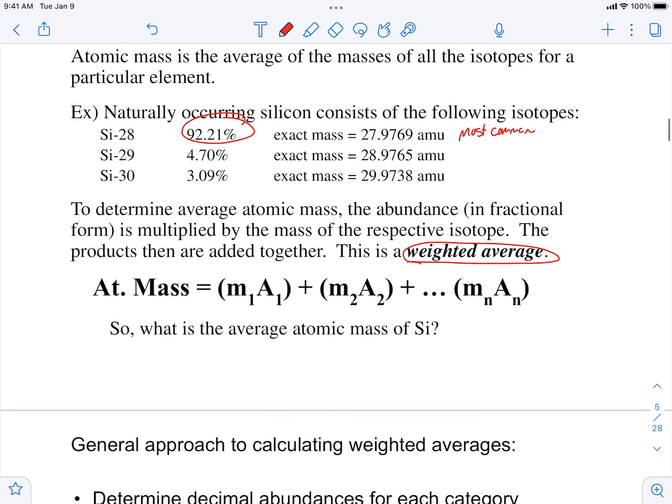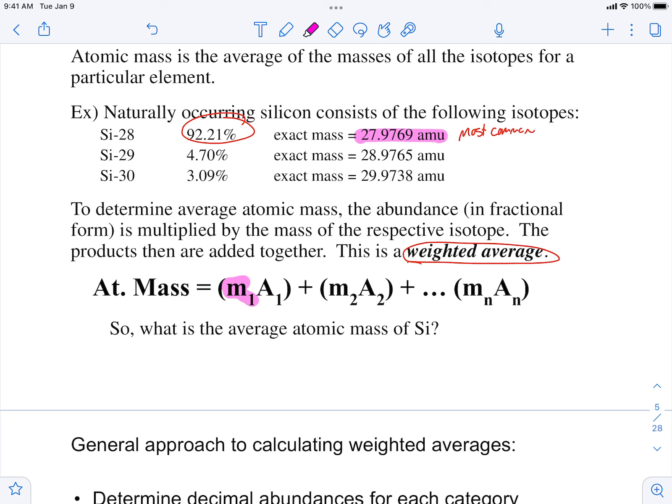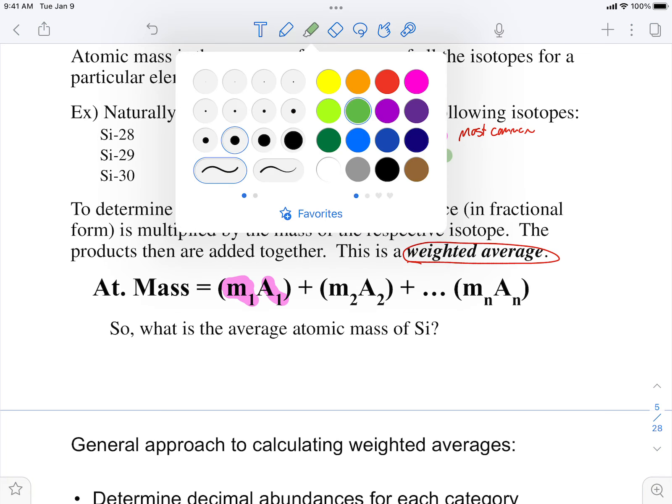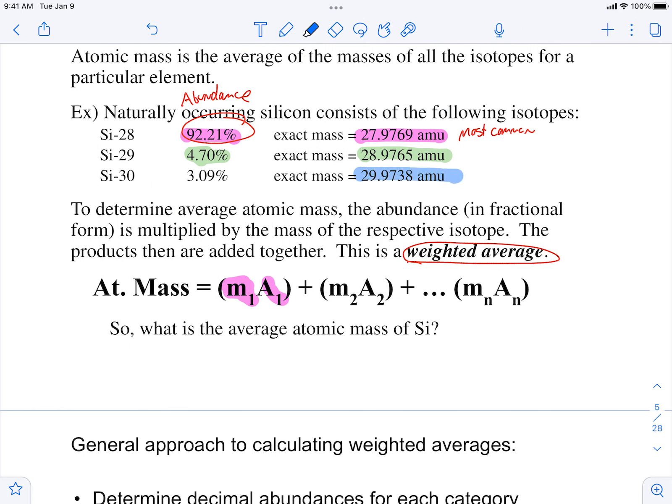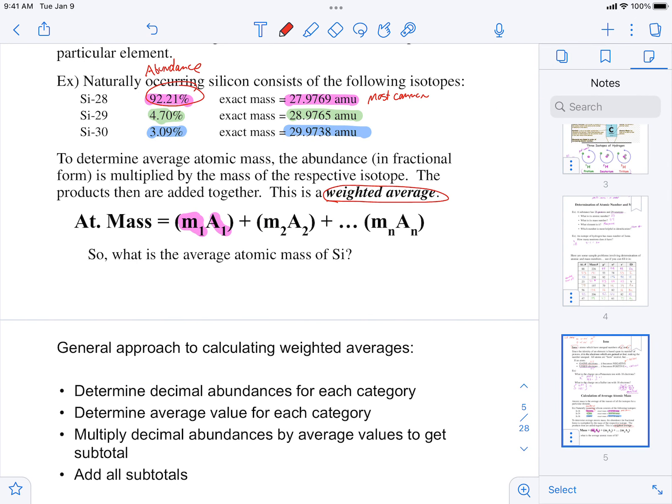We're going to take the mass, the first mass, and we're going to multiply it by its abundance. A stands for abundance. We're going to take the second mass and multiply it by its abundance. And then the third mass and multiply it by its abundance. But the abundance should be in decimal form. So I'm going to add a page here so I have enough room to work.